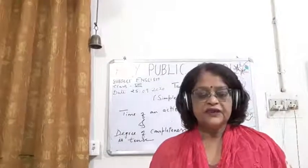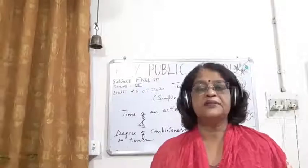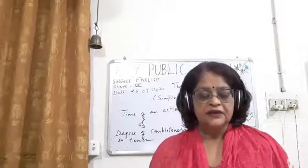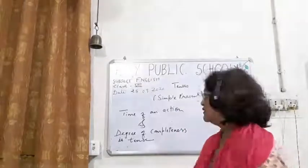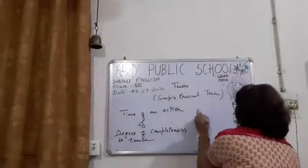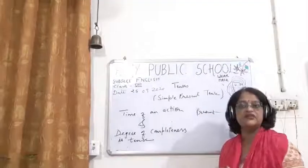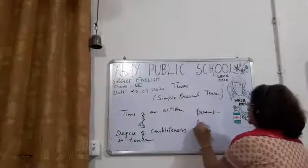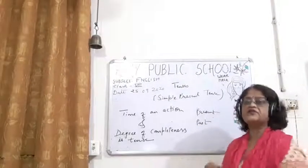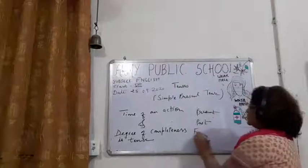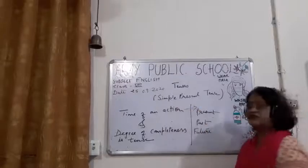So first of all, what is the time of an action? Children, the work which is done at a particular time — the action which is happening now, that we write in the present tense. The action which has already finished, which has happened, that we write in the past tense. And the action that will be taking place in the future, that we write in the future tense.